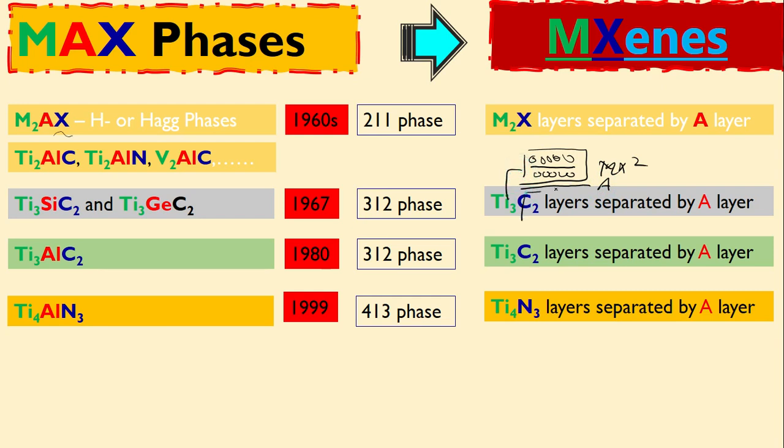And similarly this is again here MX2. This is how it looks like. Similarly these are the examples of this M2AX. This is basically 211 phase here. Later on in 1967 they discovered another phase, that is 312 phase.